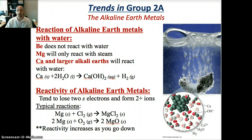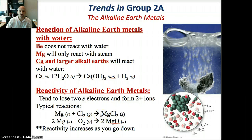The alkaline earth metals want to give away two electrons. Magnesium wants to give up two electrons to be more like the noble gases, taking on the plus-two ion form. Here you can see magnesium reacts with two chloride molecules to form MgCl2.